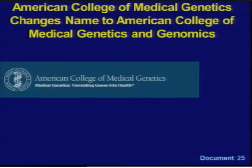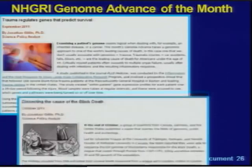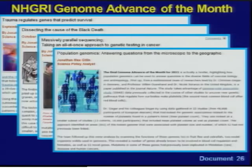The American College of Medical Genetics recently decided to change their name to the American College of Medical Genetics and Genomics, effective at their March annual meeting, while maintaining their acronym ACMG. The name change recognizes the increasingly central role of medical genomics alongside genetics. NHGRI continues to feature on our website a monthly genomic advance of the month; recent topics have included a genomics approach to trauma, sequencing the full genome of the bacteria responsible for the Black Death, next-generation sequencing targeting tumor suppressor genes, and using GWAS data to uncover new genetic pathways regulating platelet production.